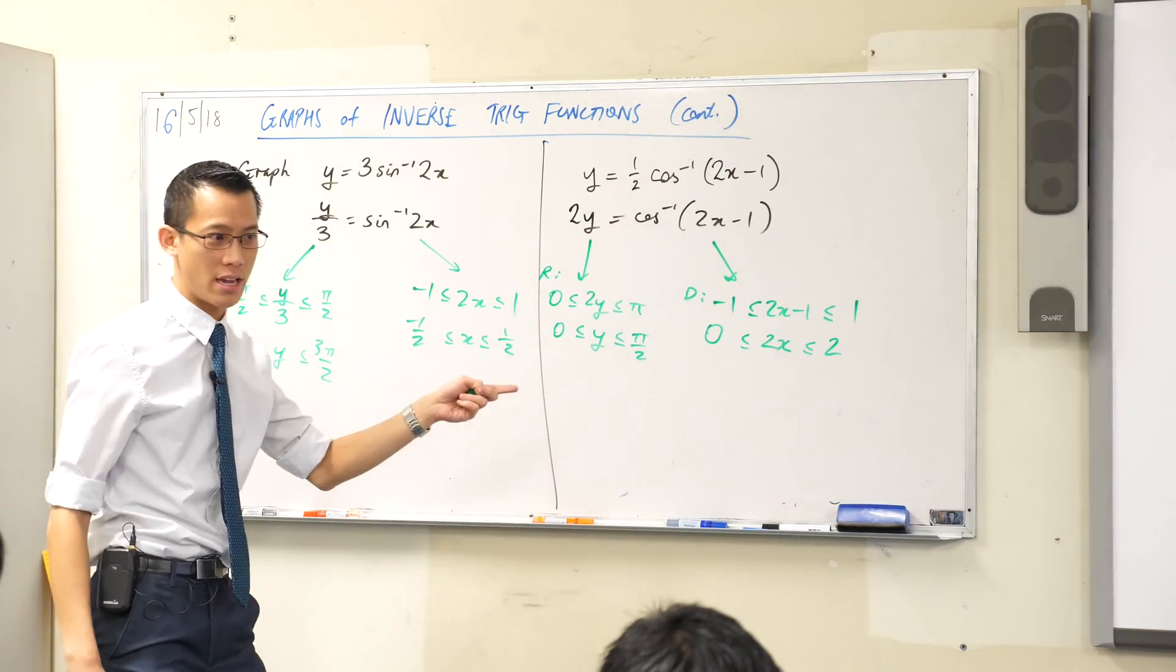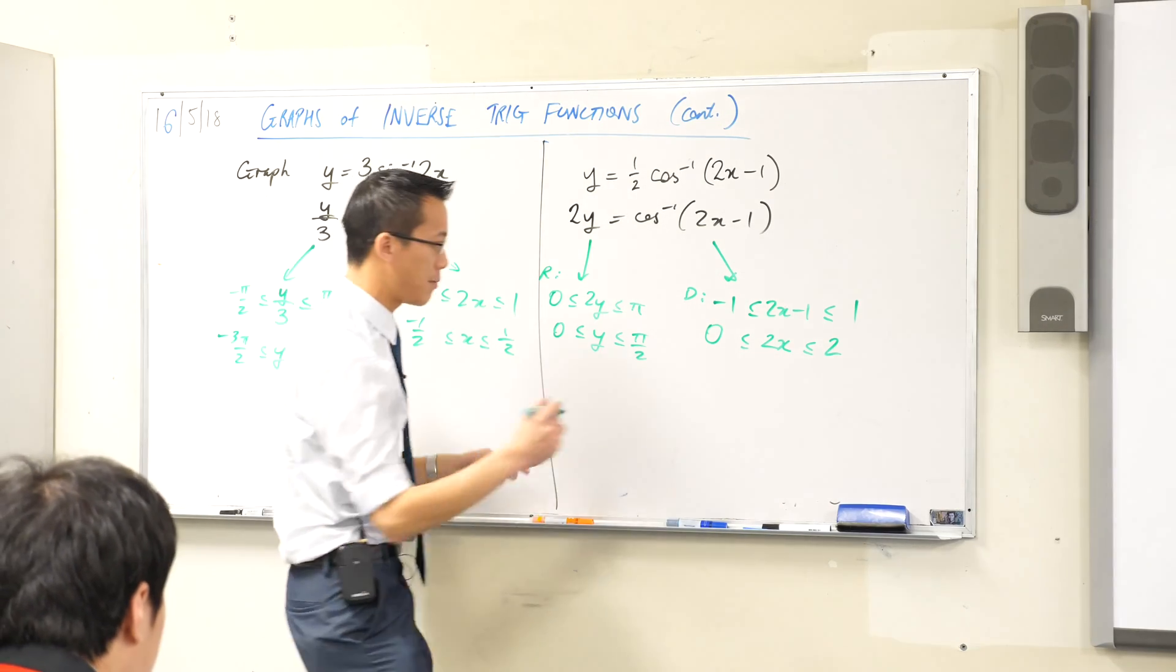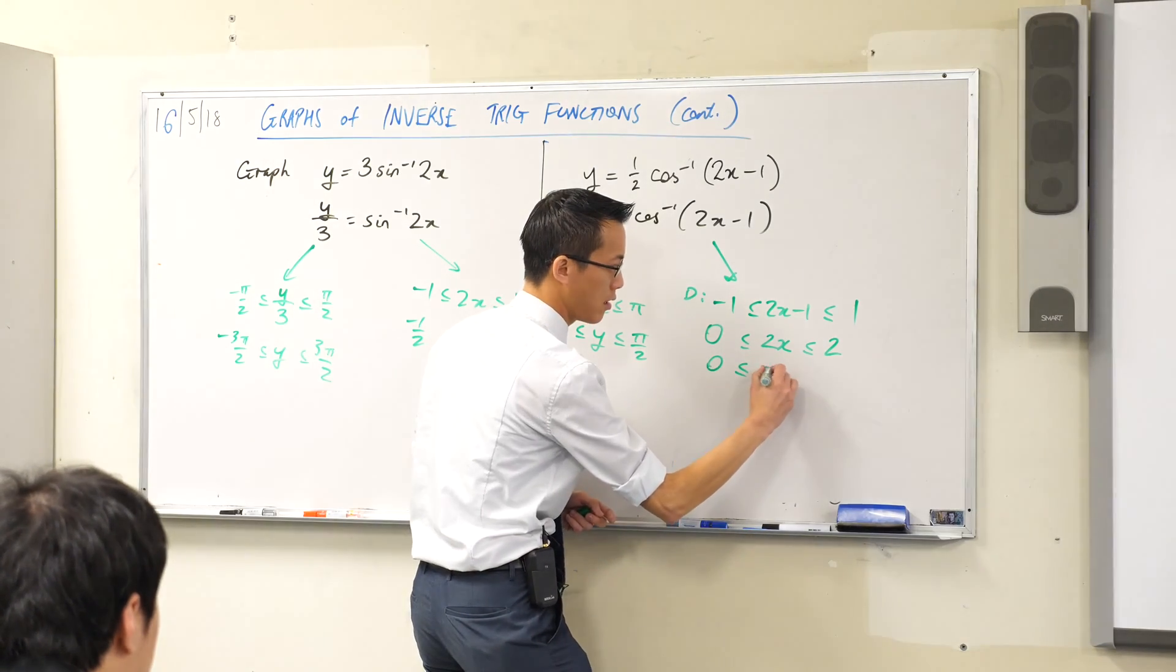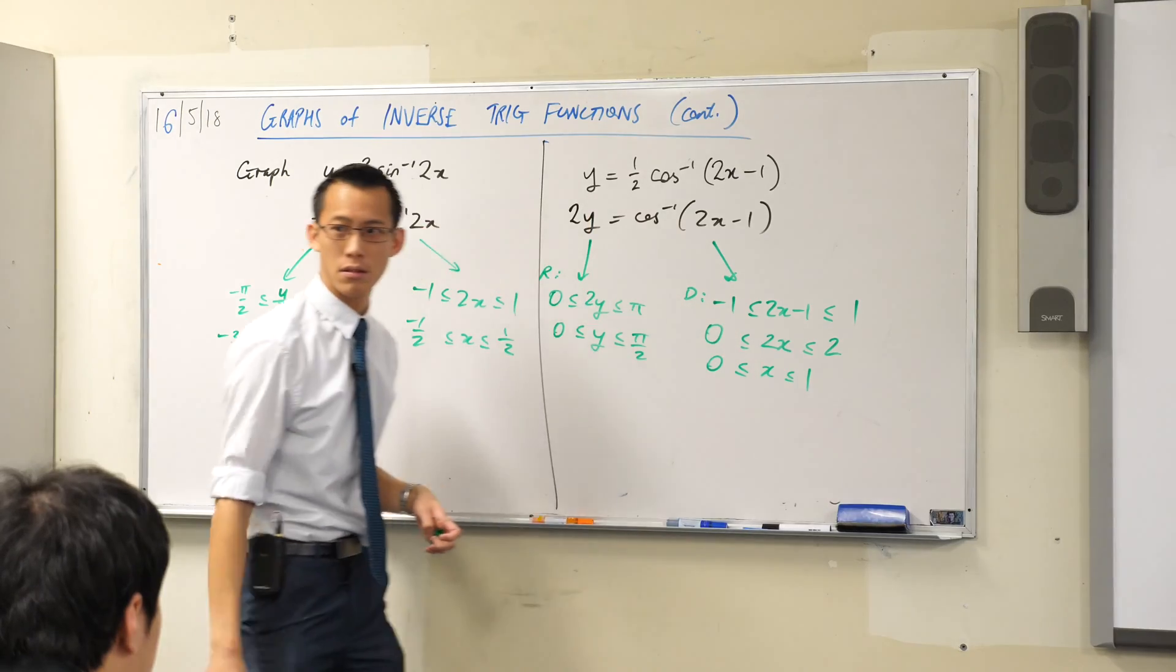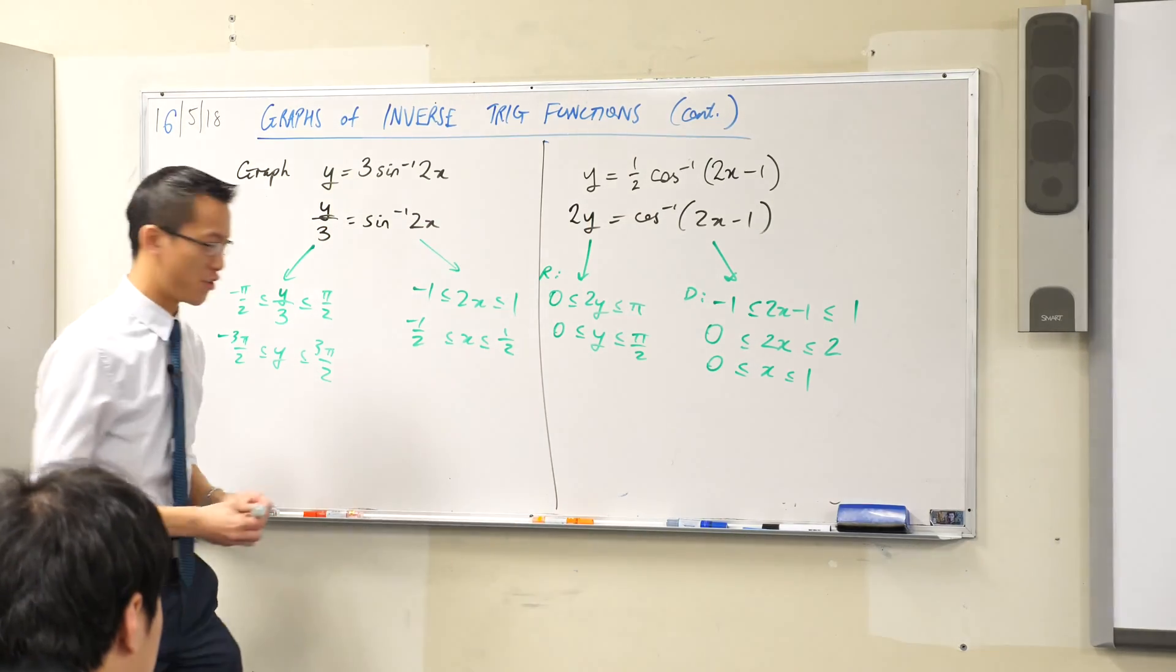Does that make sense? But I don't have the domain just yet, do I? I still have to do one more step, which is divide by 2. So that gives me this. Are you ready to draw it?